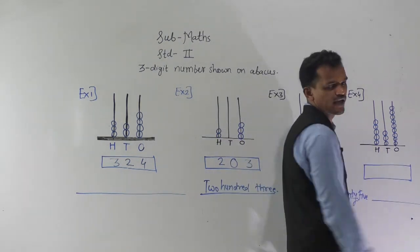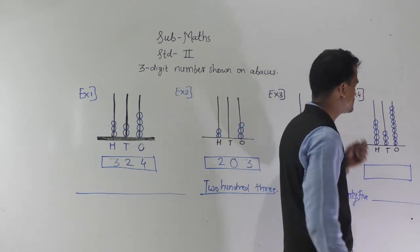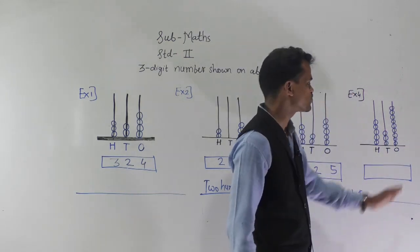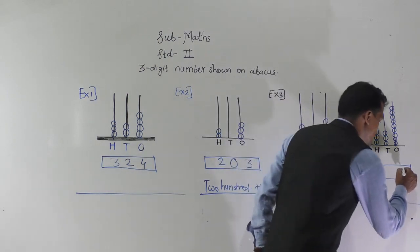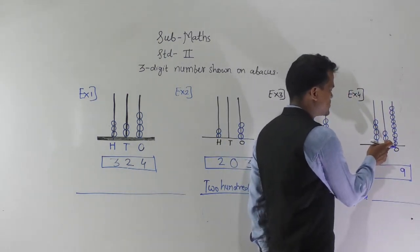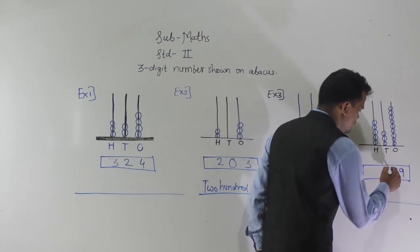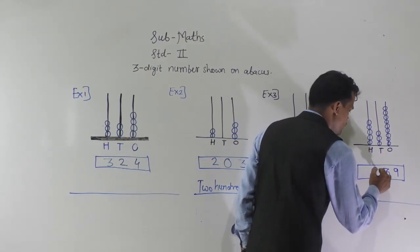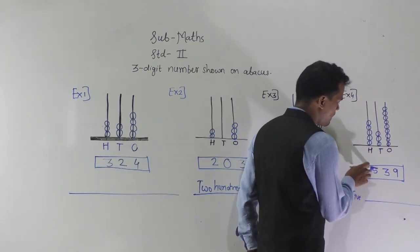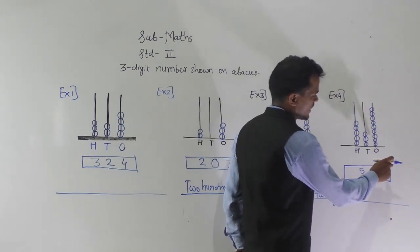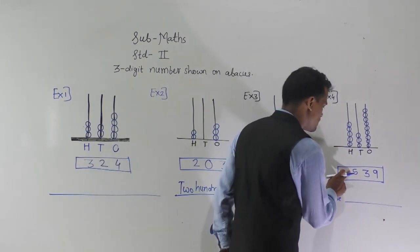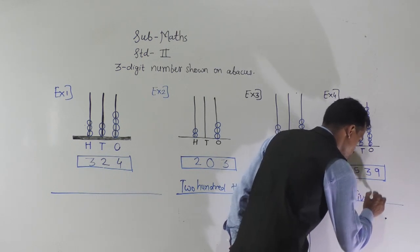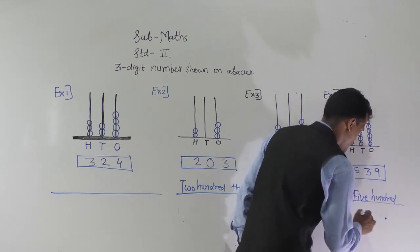In the fourth example, start from the extreme right side and count the beads. In the ones place spike there are nine beads, so write nine. In the tens place spike there are three beads, so write three. In the hundreds place spike there are five beads, indicating five hundreds. So this number is read as five hundred and thirty nine — 539.